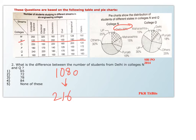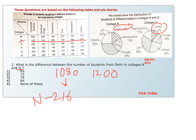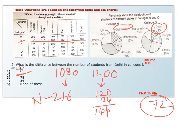For college Q, Delhi's percentage is 12%. The total number of students in college Q is 1200. So 10% is 120, and 2% is 24, giving 144 for Delhi from college Q. The difference is 216 minus 144 equals 72, which is option 2.